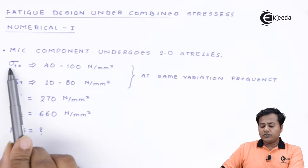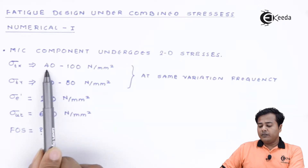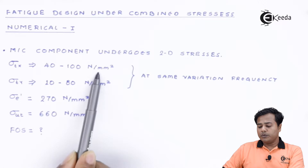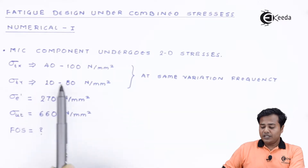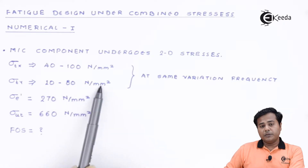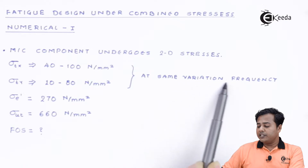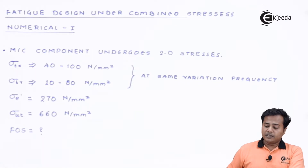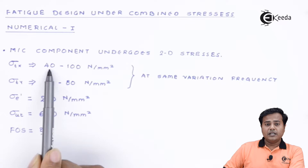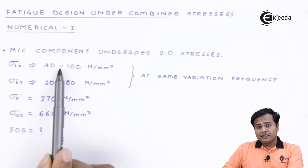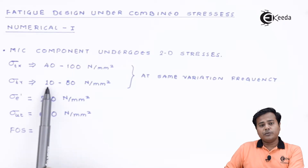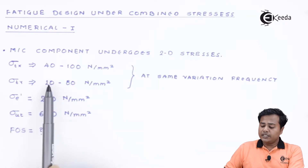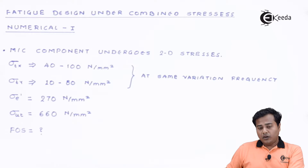The tensile stress in the X direction is varying from 40 to 100 N/mm². The tensile stress in the Y direction is varying from 10 to 80 N/mm², and it is mentioned that both vary at the same frequency. That means if the variation in X increases by 20 (e.g., from 40 to 60), this Y-direction value will also increase by 20 in the same cycle.